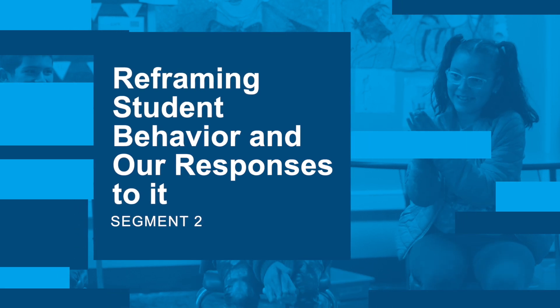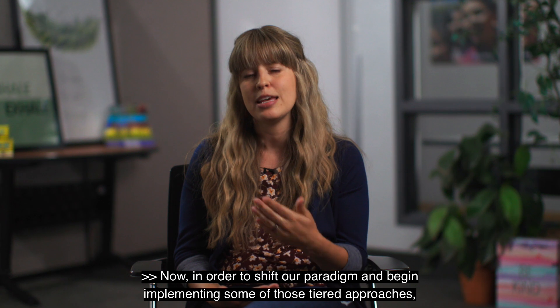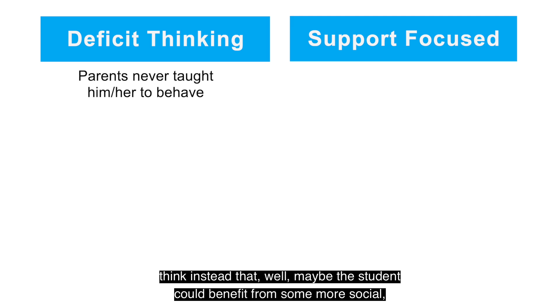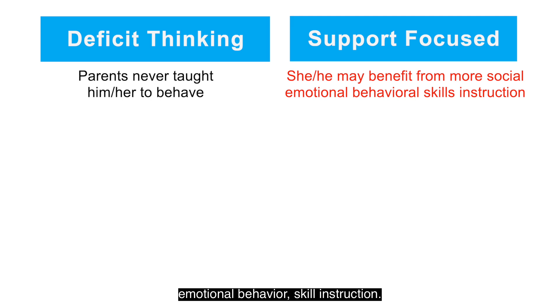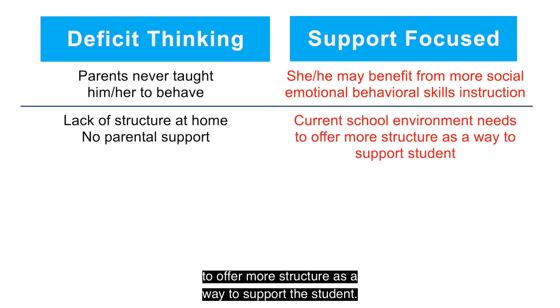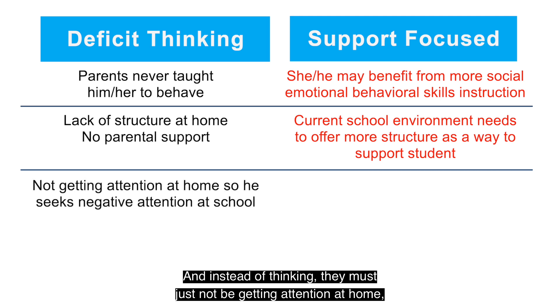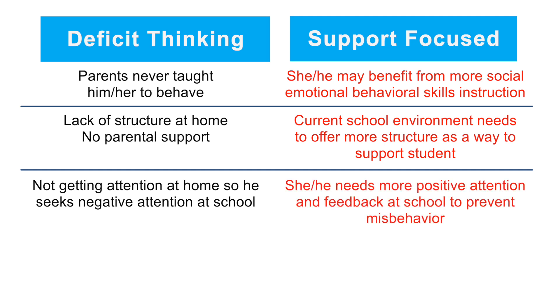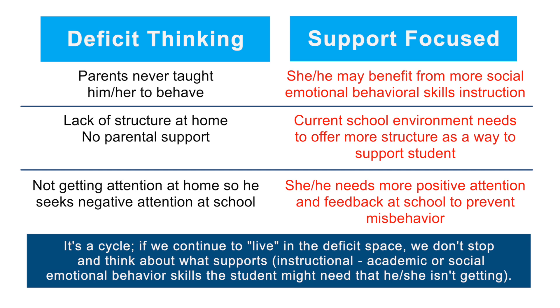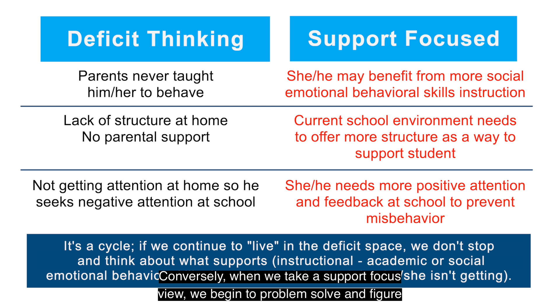Reframing student behavior and our responses to it — segment two. In order to shift our paradigm and begin implementing tiered approaches, it requires us to shift the way we think about discipline and about students. Instead of thinking the parents just never taught the student to behave, think that the student could benefit from more social-emotional behavior skill instruction. Instead of assuming a lack of structure at home, think about how the school environment might offer more structure. When we stop at deficit thinking, we stay in problem mode; a support-focused view helps us problem-solve and meet the student where they're at.